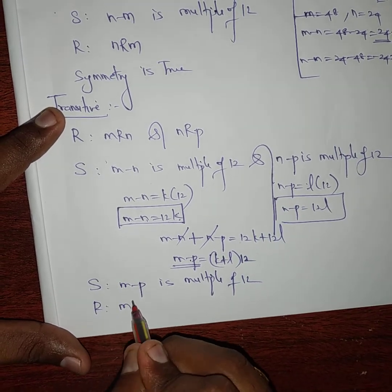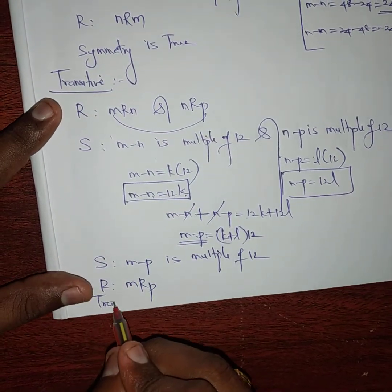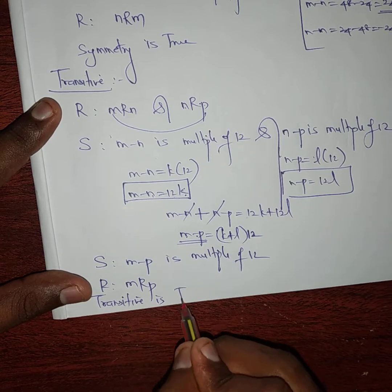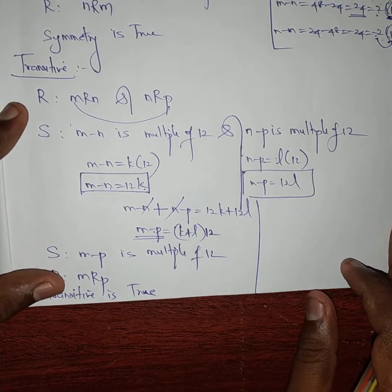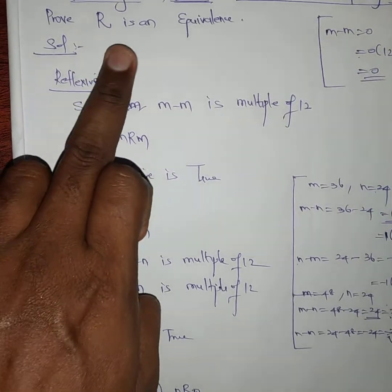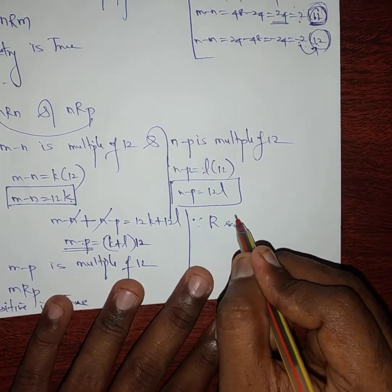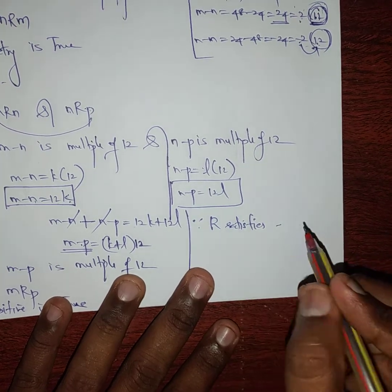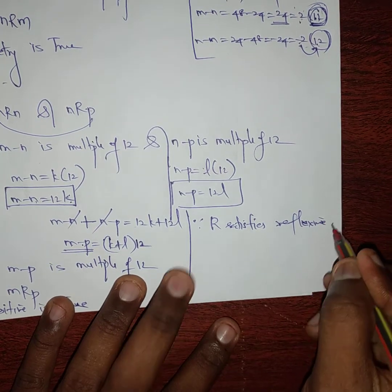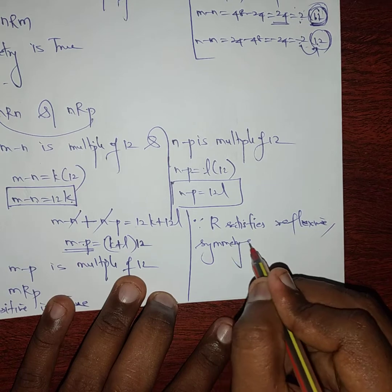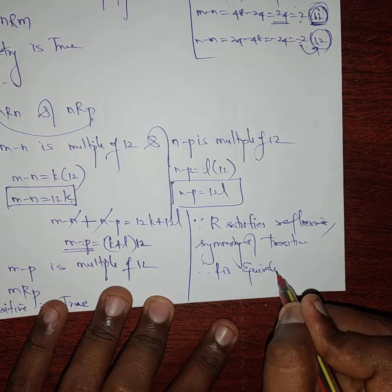Therefore m relates p, so transitive is true. In conclusion, since R satisfies reflexive, symmetric, and transitive properties, therefore R is an equivalence relation.